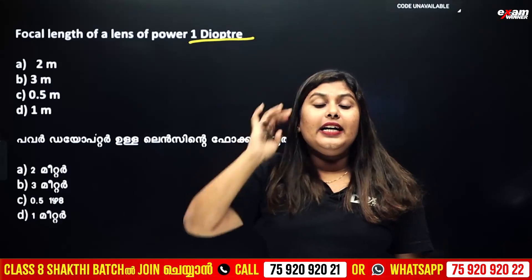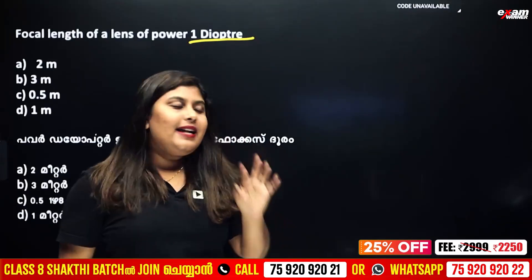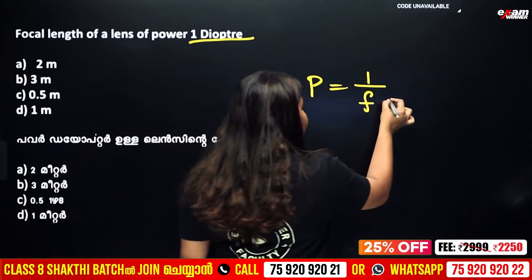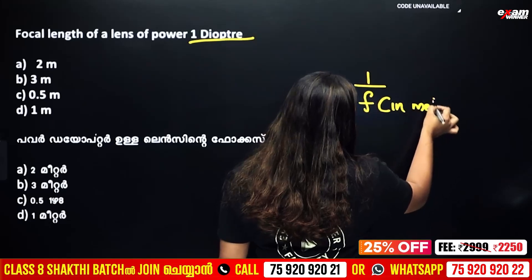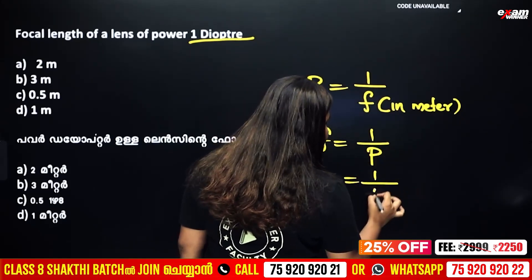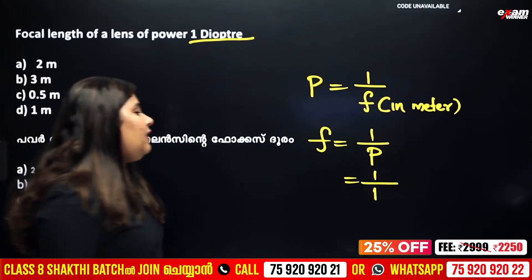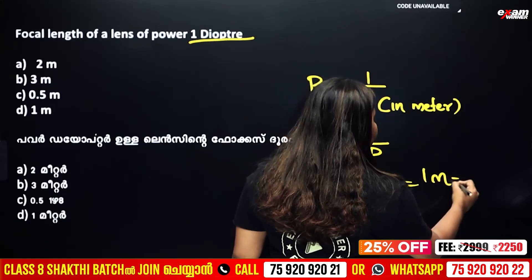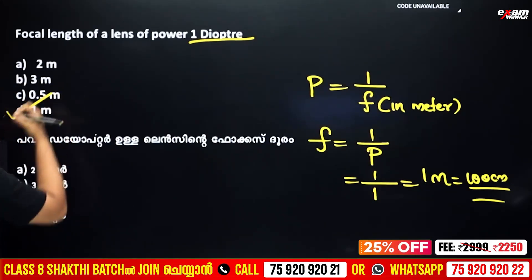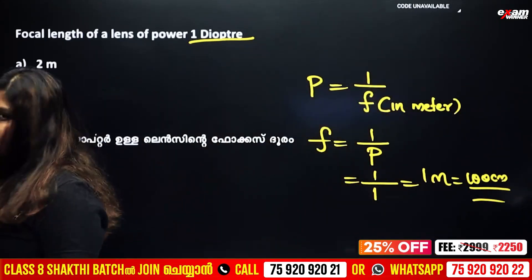The unit of power of a lens is diopter. The power equation is P equal to 1 by f, where f is in meters. F is equal to 1 by P. One diopter is the power of a lens with focal length of 1 meter. 1 meter is equal to 100 cm.